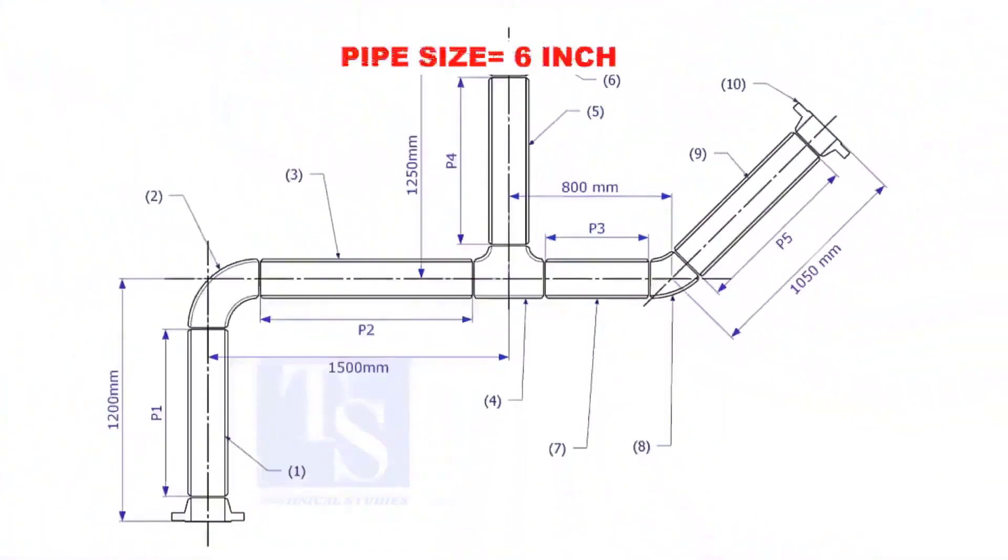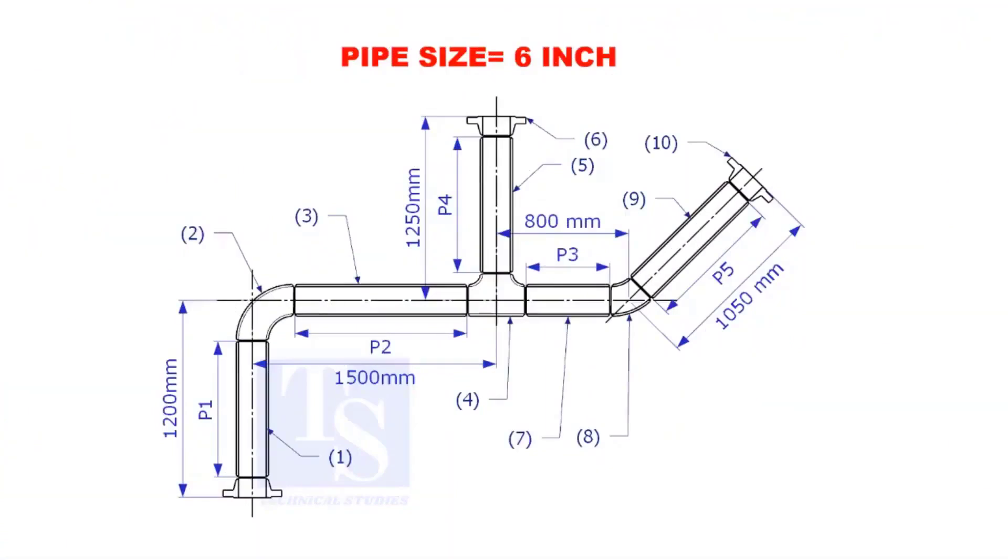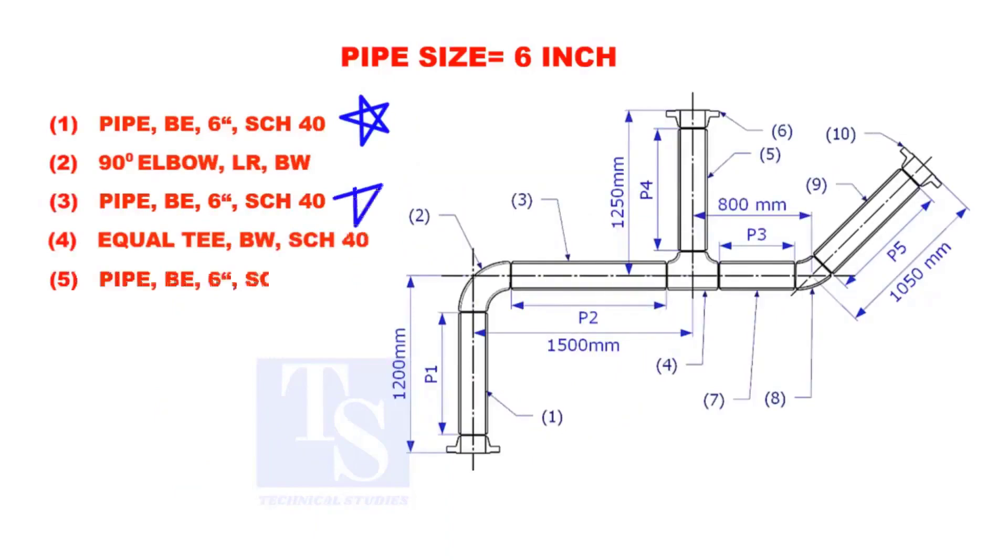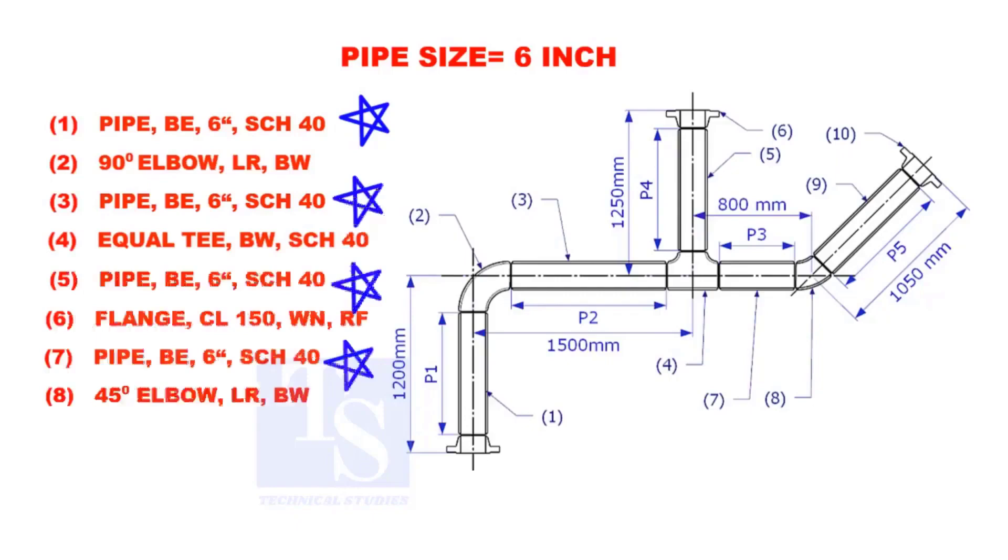Assume that the pipe size is 6 inches. Item numbers 1, 3, 5, 7, and 9 are pipes. Let us calculate the length of pipe 1.